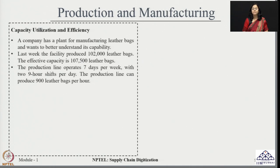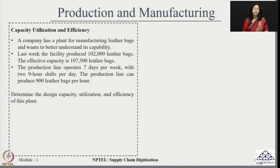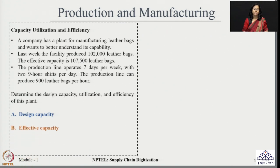Here we have to calculate certain important KPIs related to design capacity, utilization, and efficiency of the plant. All these keywords are very important. To calculate these details, we should know about 3 types of capacities: design capacity, effective capacity, and actual capacity. Design capacity is the capacity for which the system is available to be operated.